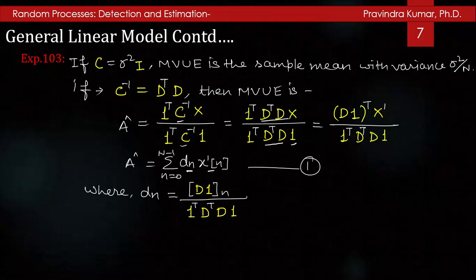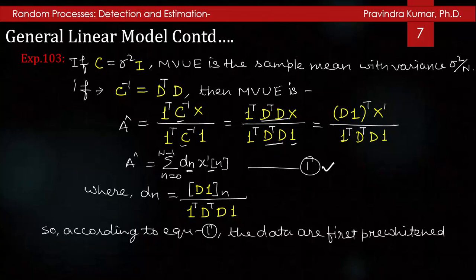According to this equation, the data are first pre-whitened to form x dash(n), and then averaged using pre-whitened averaging weights d(n).